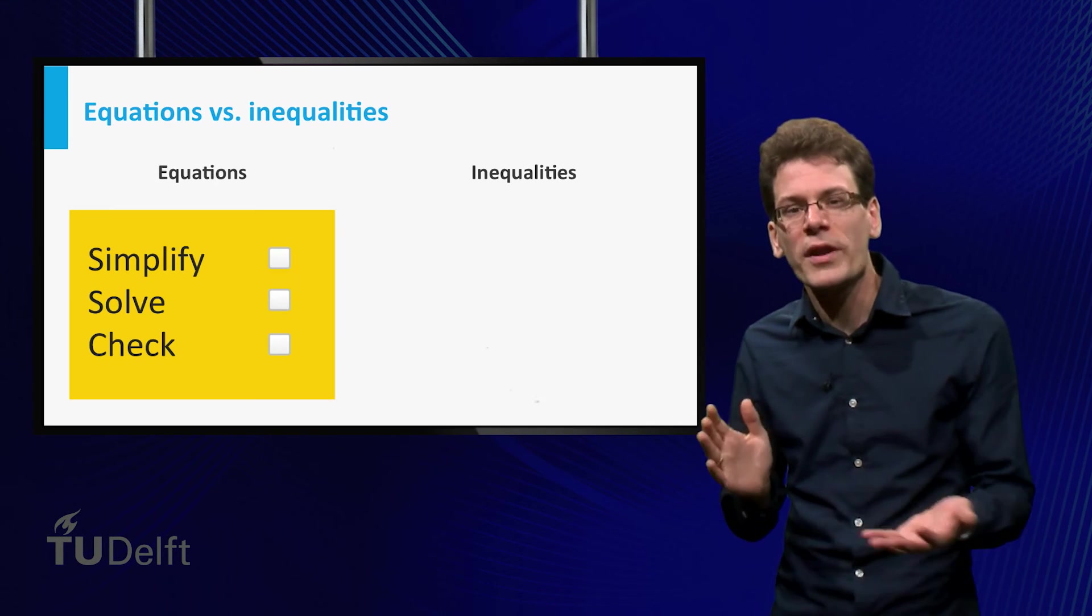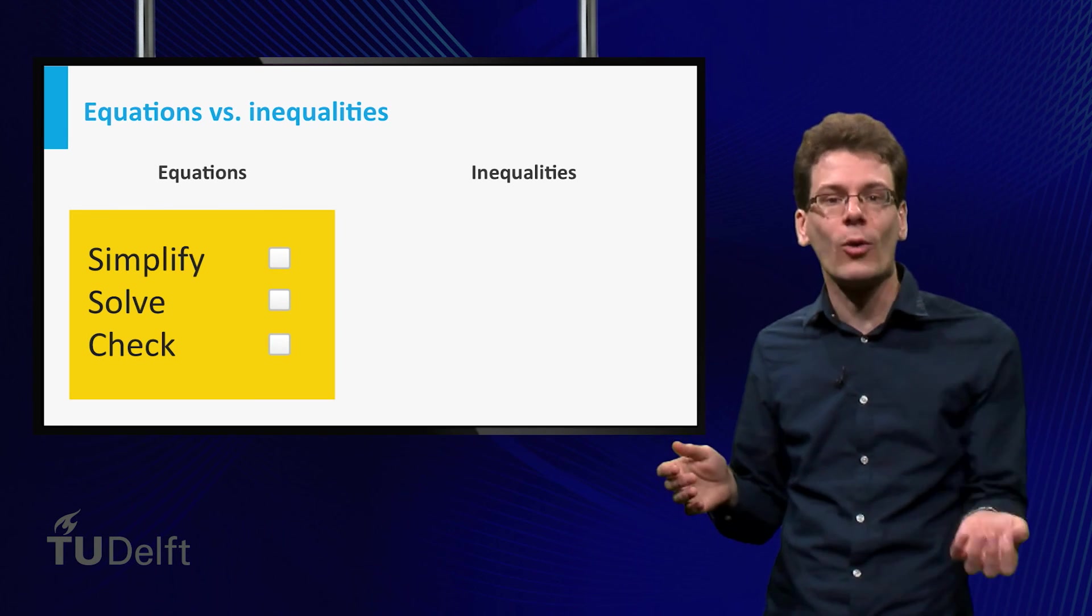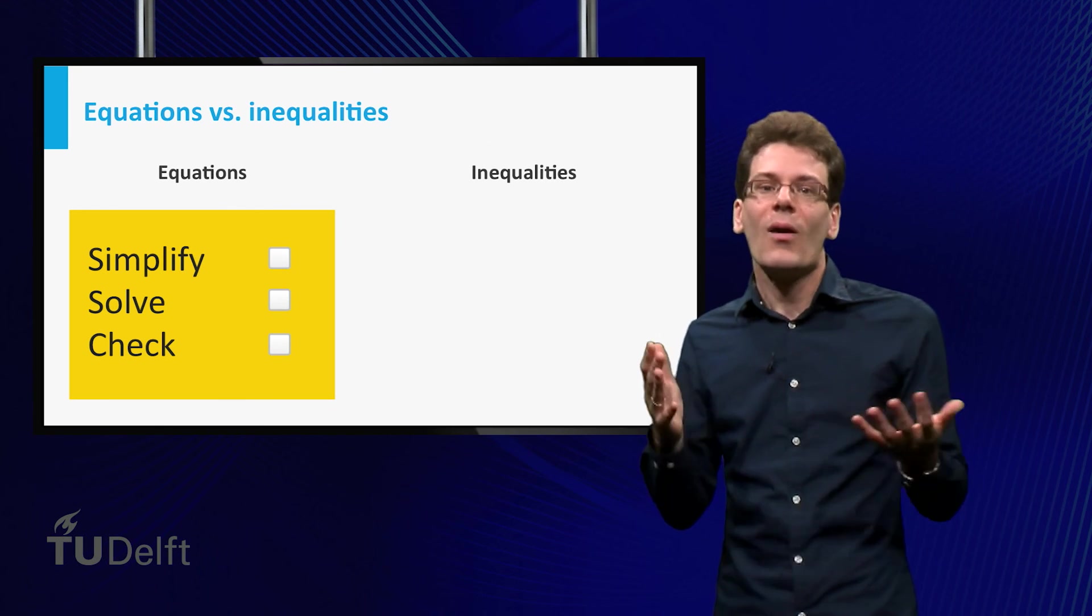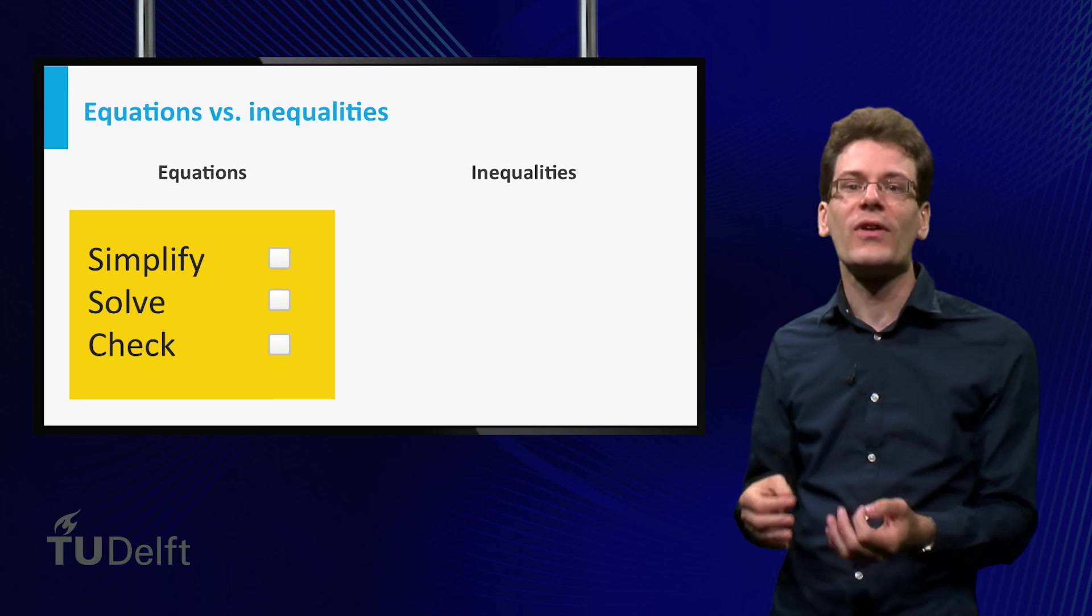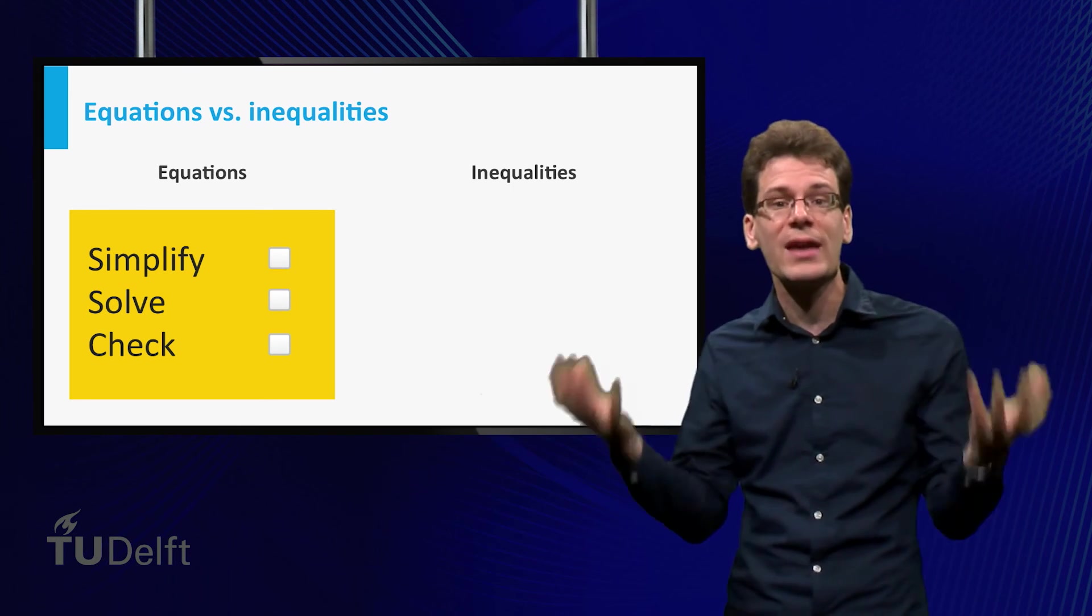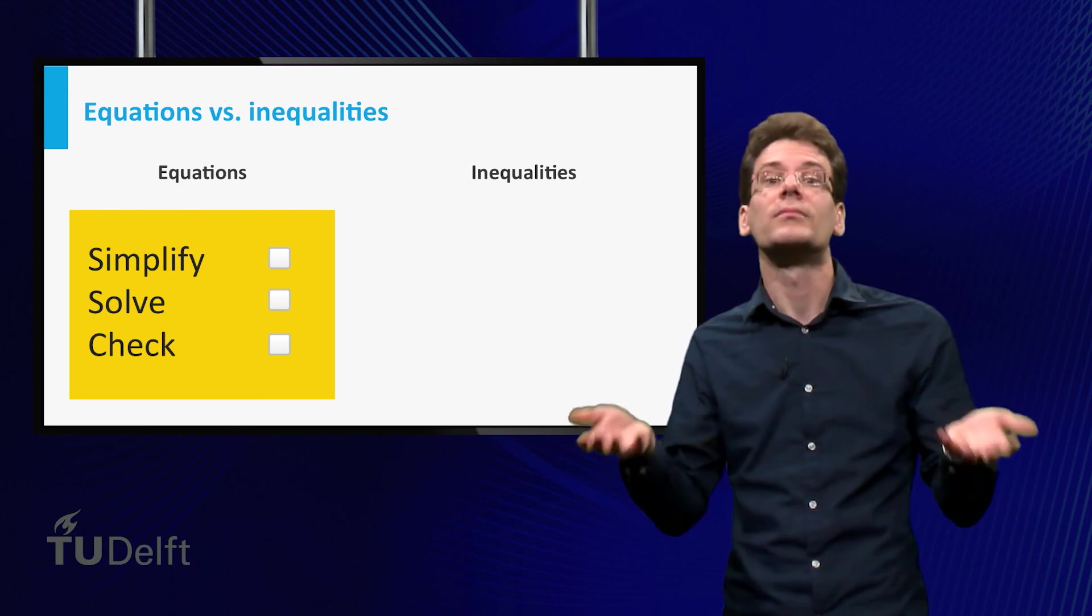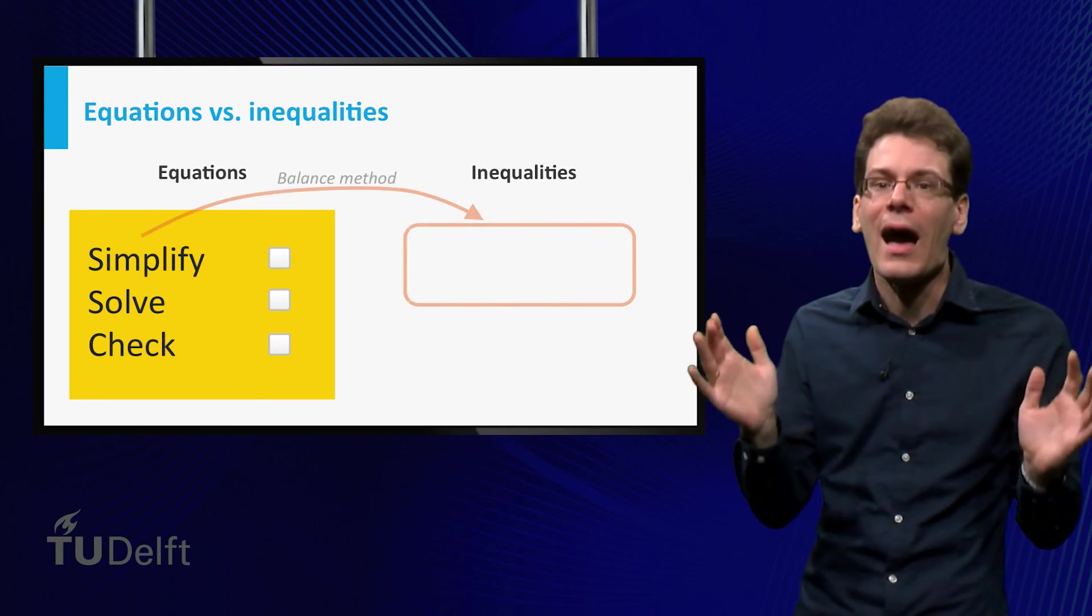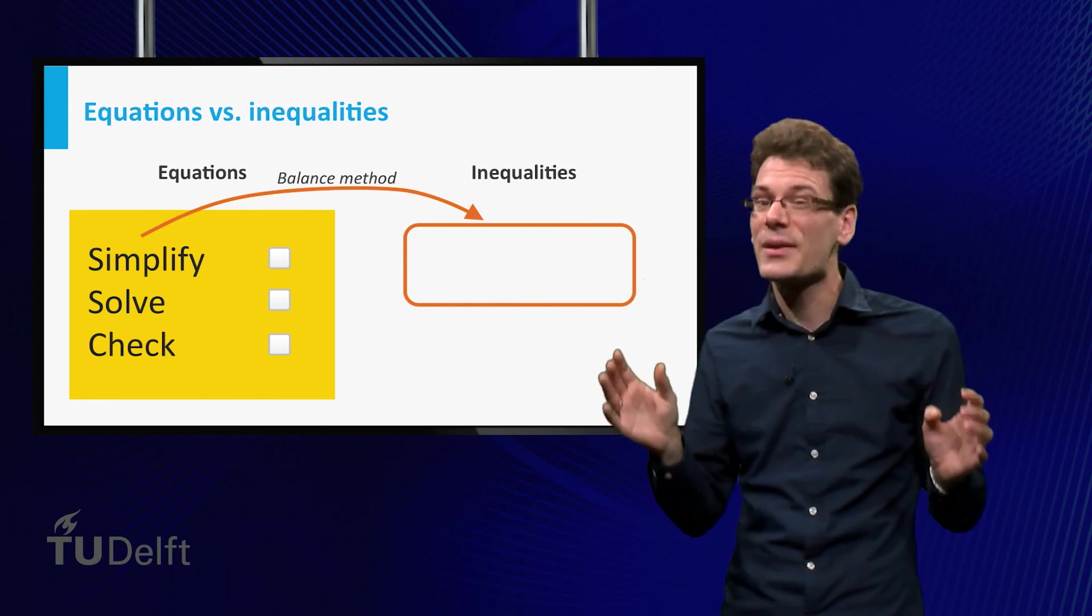You may wonder, what happened to the simplify-solve-check strategy that we used for solving equations? Well, the main method to simplify an equation is to apply the same operation on both sides. If you do that to an equation, it remains valid. However, for an inequality this can be quite tricky.